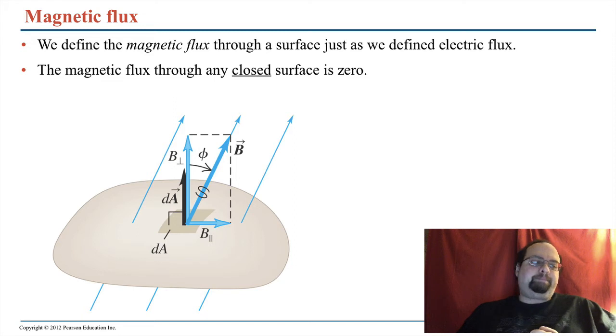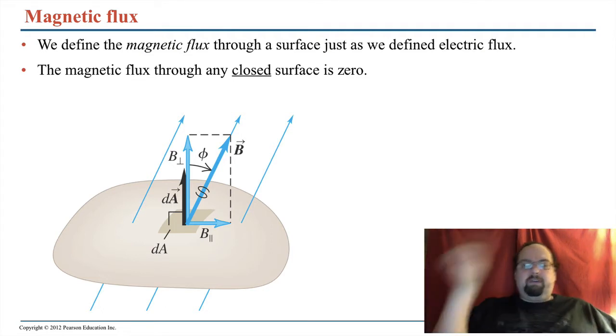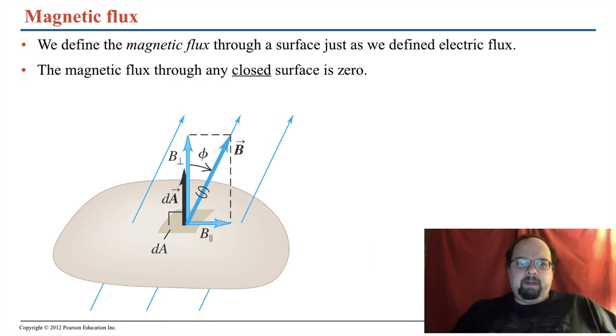So anything, any magnetic field leaving your Gaussian surface has to come back in somewhere. And so even if there's a source of magnetic field in there, it's got to come back to it again. We've got to loop around. So rather than being sort of radially outward, magnetic fields are loopy, pardon the expression. And so your flux enclosed is always zero.